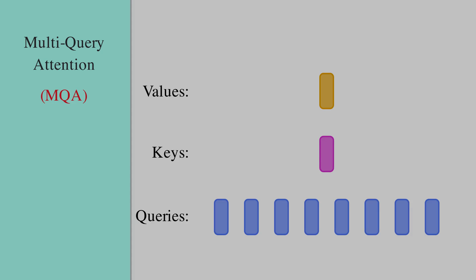Then we perform dot product of all these queries with the same shared key matrix. So we will get h different products of Q K transpose.